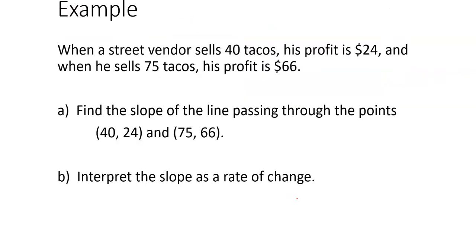So here's an example. I want to find the slope of the line and figure out what that means in terms of rate of change. So it says when a street vendor sells 40 tacos, profit is $24. When he sells 75, the profit is $66. So we're assuming in this case that we're talking about a linear relationship between the two of them. So (40, 24), remember the first coordinate is going to be tacos. The second coordinate is going to be profit. Same thing happens here. Number of tacos and profit.